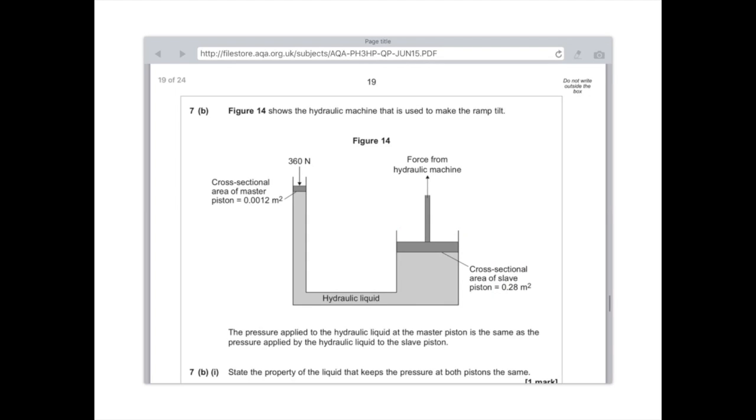Now, for AQA people, you will get the equation, but for other examples, you won't get the equation for calculating pressure. So, remember this formula triangle, which is force equals area times pressure. Now, what you want to do first of all is work out the pressure acting on this side. So, the way you're going to do that is by writing pressure equals force divided by area. We were given the force of 360 Newtons divided by the area, which is 0.0012 metres squared. If you tap that into your calculator, you get an answer, which is this answer.